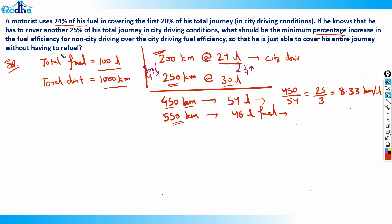For the non-city driving scenario: if he doesn't refuel, the next 550 km must be covered with 46 liters. Fuel efficiency needed = 550 ÷ 46. Calculating: 46 × 10 = 460, 46 × 2 = 92, so 460 + 92 = 552 — meaning 12 times gives 552, which is just over 550. So efficiency is approximately 11.95 km per liter, just under 12.